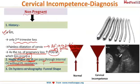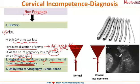Apart from this, hysterocervicography can be done in the non-pregnant state. A Foley's catheter is inserted inside the uterus and a radiopaque dye is injected. In normal patients, since the os is closed, the dye will not come out. In cases of cervical incompetence, since the os is open, the dye comes out and the cervicography shows a funnel-shaped appearance.